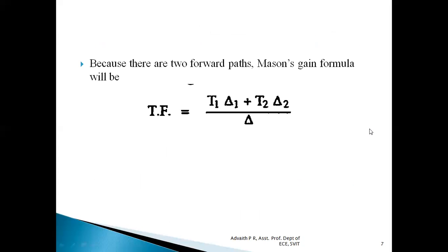When there are two forward paths, the Mason gain formula becomes: transfer function equals (T1·delta1 + T2·delta2) / delta. Because we have two forward paths, we have T1·delta1 + T2·delta2. If we had three forward paths, we would add T3·delta3. So first we identify the number of forward paths, then apply Mason's gain formula. Next, we need to find delta1, delta2, and delta.